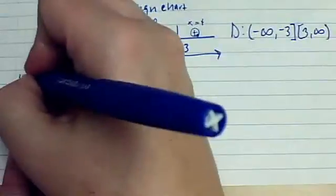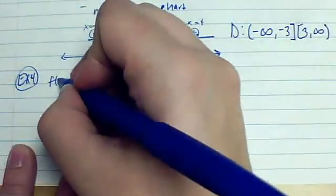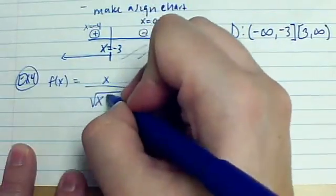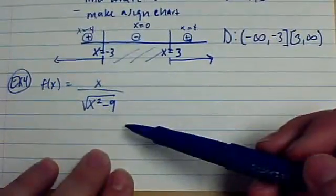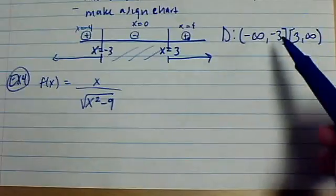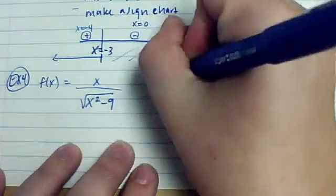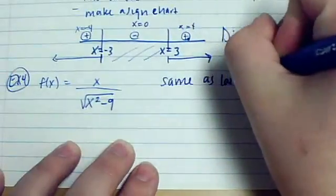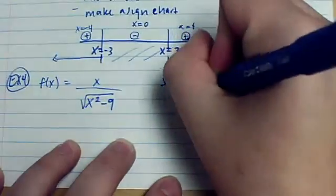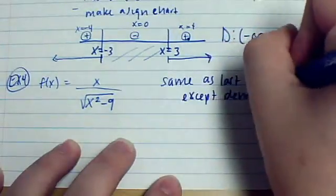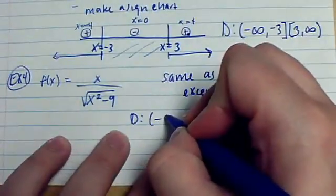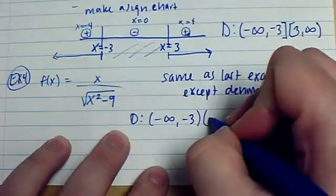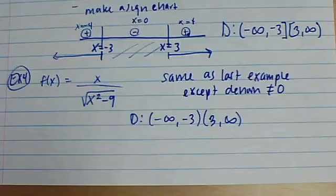What if we had a function like the previous but this time the radical's on the bottom? So this is the same exact thing but now it's on the bottom. Well, the only difference here is that it can't be 0 because that would make it undefined. So, this is same as last example. Except your denominator cannot equal 0. So, all I have to do is change these brackets to parentheses.